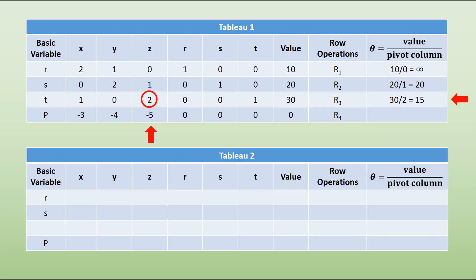We then proceed onto Tableau 2. The first thing we do when constructing this is include z now as our basic variable, because the pivot is in the z column. It's in the row that was headed by t as the basic variable, and what we're doing is changing that t into a z. This is quite commonly forgotten, so make sure that you do this. Then we're going to divide the row headed by z by the value of the pivot. Here in the row operations, I'm calling this row 7, and we're going to do row 7 is row 3 divided by 2.